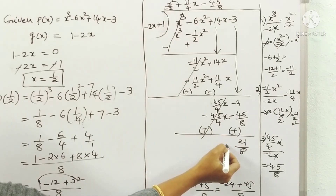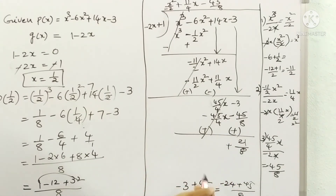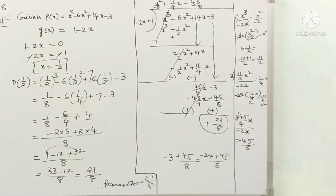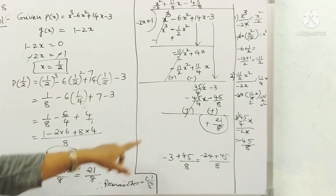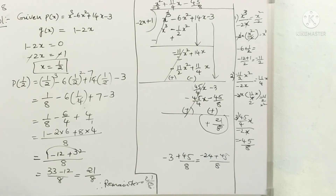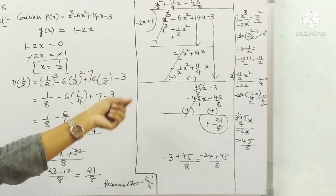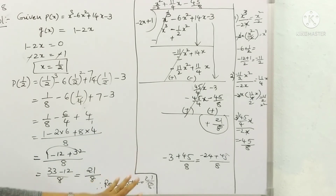So by using the remainder theorem we got the remainder as 21 by 8, and by actual long division also we got the remainder as 21 by 8. This is our 8th problem. The calculations may feel a little difficult because fractions came, but it's not actually difficult. Do the calculations on a separate page and then you can do this problem in a very easy way.